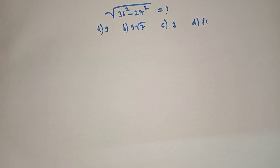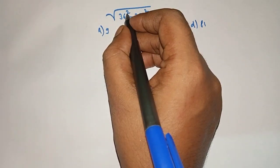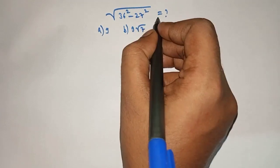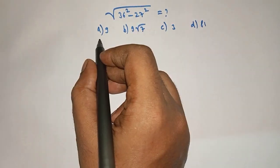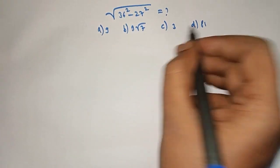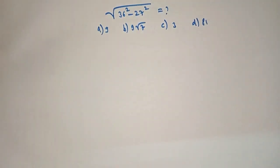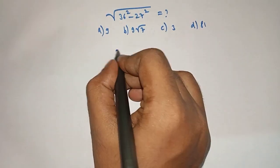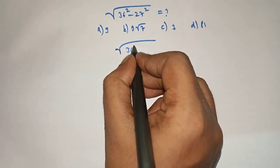Hello friends, welcome to aha math. Square root of 36 square minus 27 square is equal to what? Option a: 9, option b: 9 root 7, option c: 3, option d: 81. So let's solve.